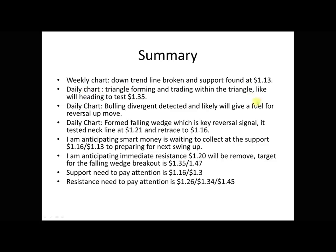Summary: On the weekly chart, the downtrend line is broken and support was found at $1.13. On the daily chart, a triangle is forming and it is trending within the triangle — it will likely head to test $1.35. On the daily chart, bullish divergence is detected and it will likely give fuel for this reversal up move. Also on the daily chart, a falling wedge formed — a key reversal signal. It tested the neckline at $1.21 and retraced to $1.16. I am anticipating smart money is waiting to collect at the support levels of $1.16 and $1.13 to prepare for the next swing up. I am anticipating the immediate resistance at $1.22 will be removed. The target for the falling wedge will be $1.35, and $1.47 on a breakout. Support to pay attention to is $1.16 and $1.133.